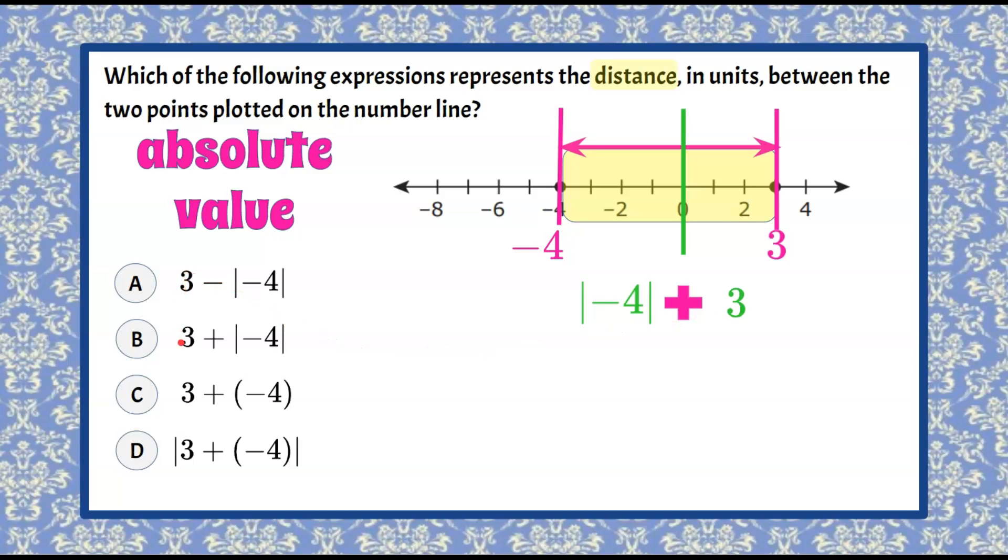But when we look at our answer choices, they all start with three. Well addition is commutative, meaning the order in which I add does not matter. So let's rewrite our numerical expression so that three is on the left adding our absolute value of negative four.